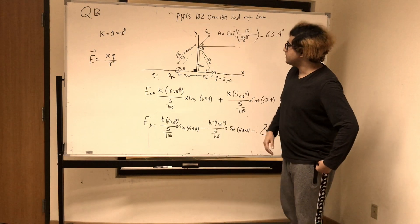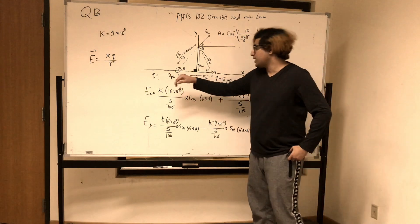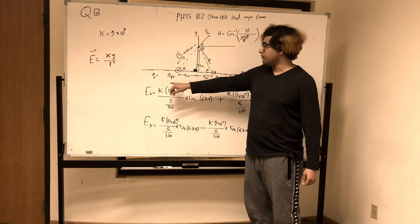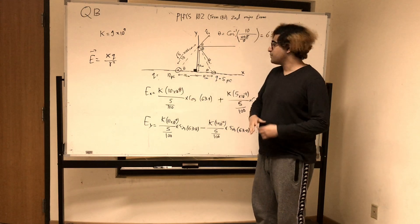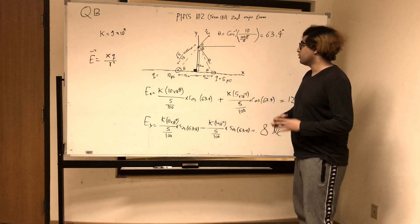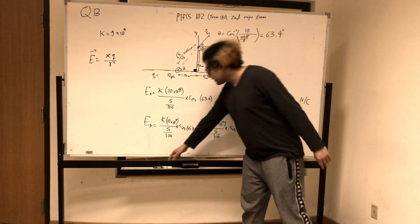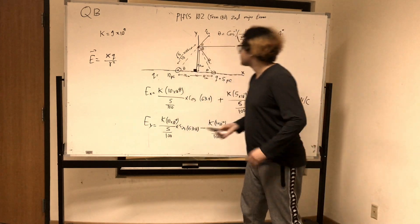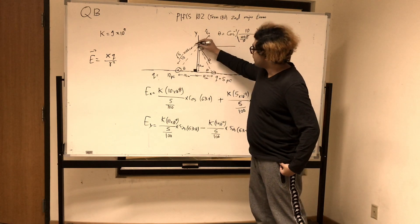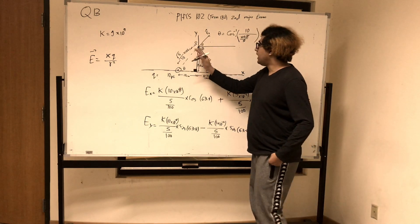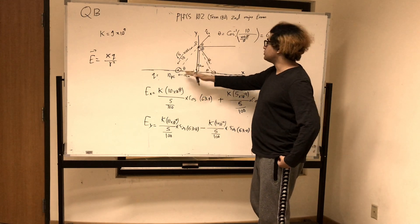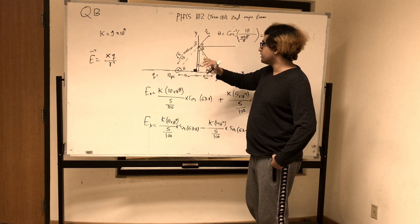So in the question it says that we have two charges. A positive charge has a value of 10 picocoulombs and another negative charge that has a value of 5 picocoulombs. We're given a point E on the graph, and we're asked to find the net electric field due to these two charges at this point.